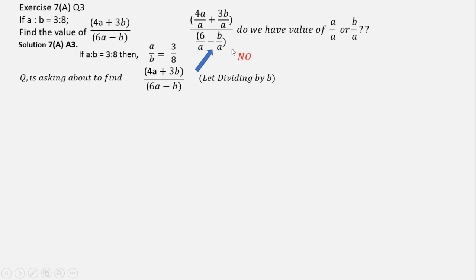That's the reason, if we divide by a, we are not getting anything. But if we divide by b, we will be having a value which is a by b, which is already given as 3 by 8, if you can see here. So that's why we require to divide this by b.